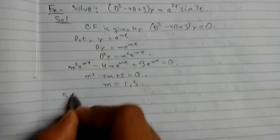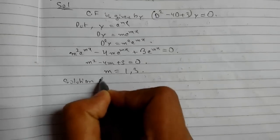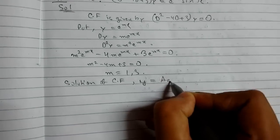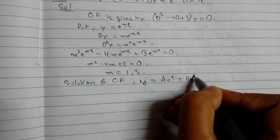So the factors will be 1 and 3. So the solution of CF will be y = Ae^x + Be^(3x).